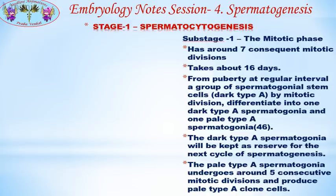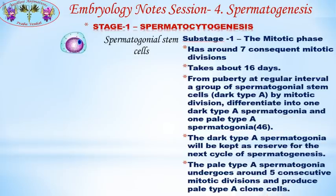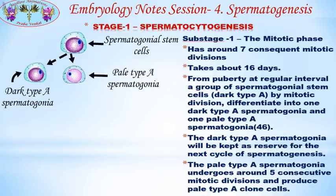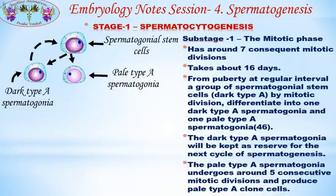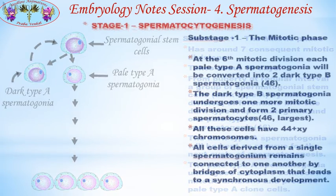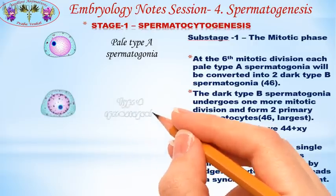From puberty, at regular intervals, a group of spermatogonial stem cells by mitotic division differentiate into one dark type A spermatogonia and one pale type A spermatogonia. The dark type A spermatogonia are kept as a reserve for the next cycle of spermatogenesis. The pale type A spermatogonia undergo around 5 consecutive mitotic divisions and produce pale type A clone cells.